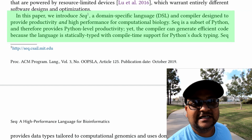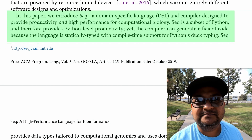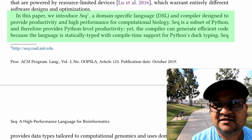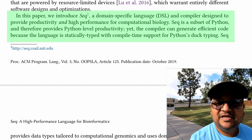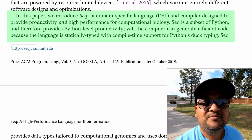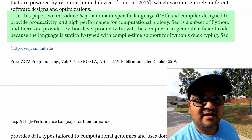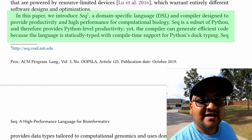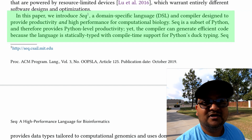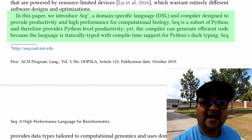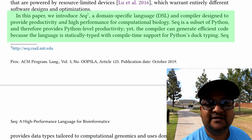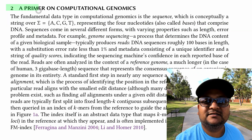Seq has a couple of key differences from Python. The first is that it sacrifices some of the more dynamic features of Python so that the entire program can be statically typed at compile time. The second major difference is that it allows for types and language constructs specific to gene sequencing.